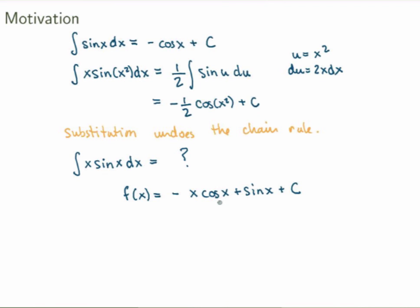I know the answer, so I can guess it. It turns out that if I write down the function f of x equals minus x cos of x plus sine of x plus a constant, then this is the result of integration. How do I know that? We can check it — we just calculate the derivative. f prime of x gives two terms from the first part using the product rule: minus cos of x plus x sine of x, plus the derivative of sine of x which is cos of x. Those two terms cancel, and what remains is indeed the integrand. So this is the general antiderivative of x sine of x.